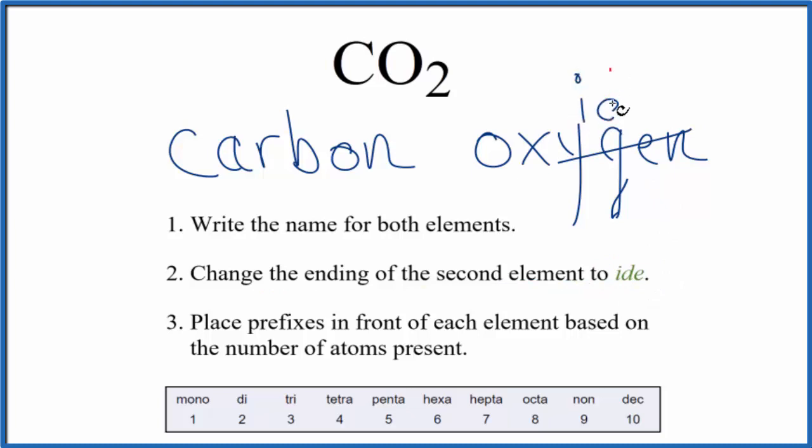And we write ide. So now for CO2, we have the name carbon oxide. Since this is a molecular or covalent compound, we use prefixes in front of each element based on the number of atoms present.